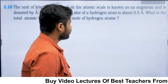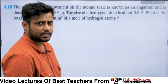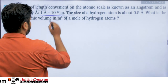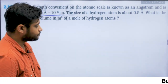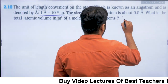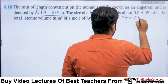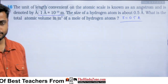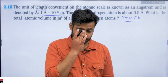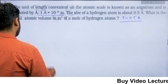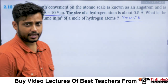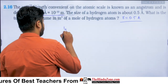The unit of length convenient on the atomic scale is the angstrom. One angstrom is 10⁻¹⁰ m (one ten-billionth of a meter). The size of a hydrogen atom is about 0.5 angstrom. The question asks for the total atomic volume in m³ of a mole of hydrogen atoms. We treat the atom as a sphere of radius 0.5 angstrom, so volume = (4/3)π r³ with r = 0.5 angstrom.